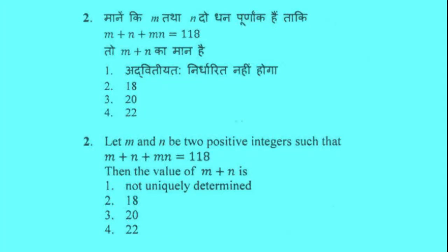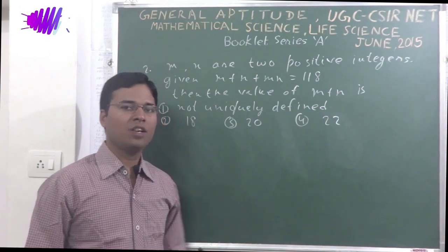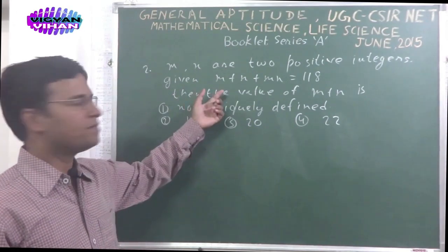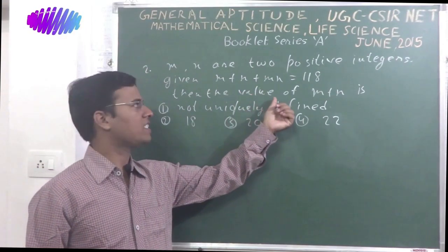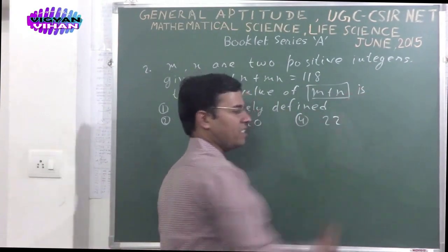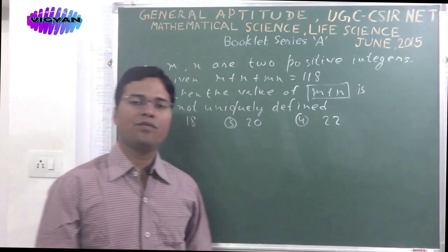The second problem. Let small m and small n be two positive integers such that m plus n plus mn is equal to 118. Then the value of m plus n is: option 1, not uniquely determined; option 2, 18; option 3, 20; option 4, 22. The next problem is problem number 2. In this problem, there are two positive integers m and n. For them, there is given relation m plus n plus mn is 118. Then we will have to find out the value of m plus n from the given options.